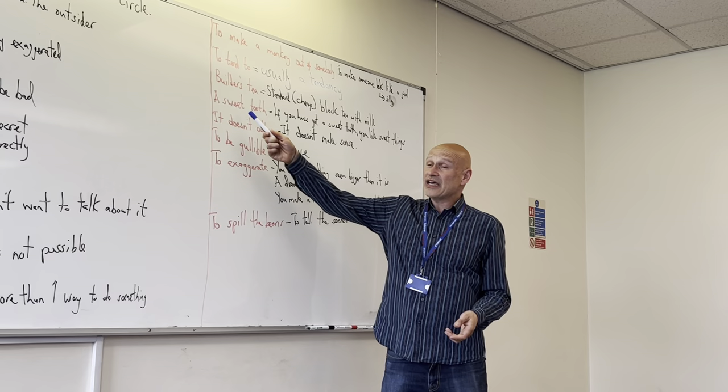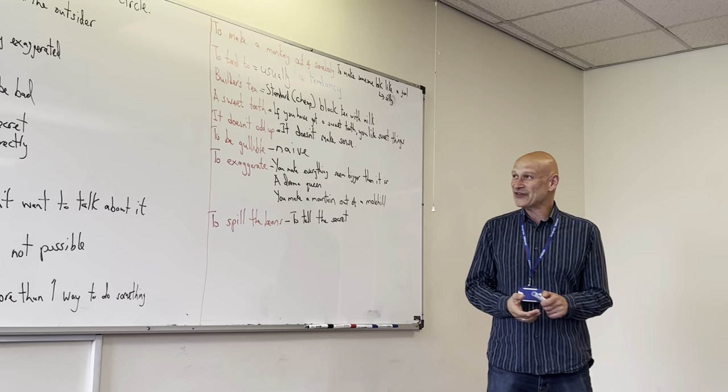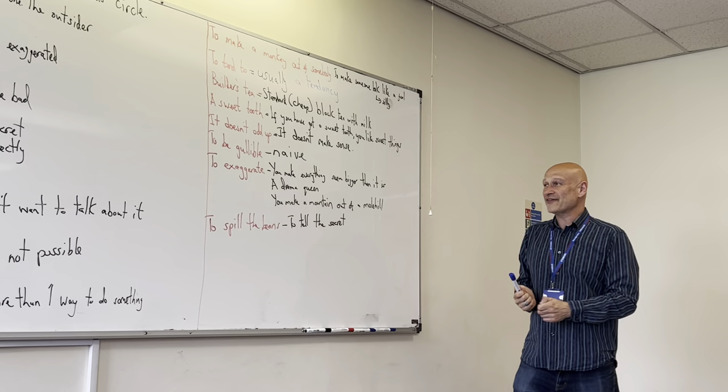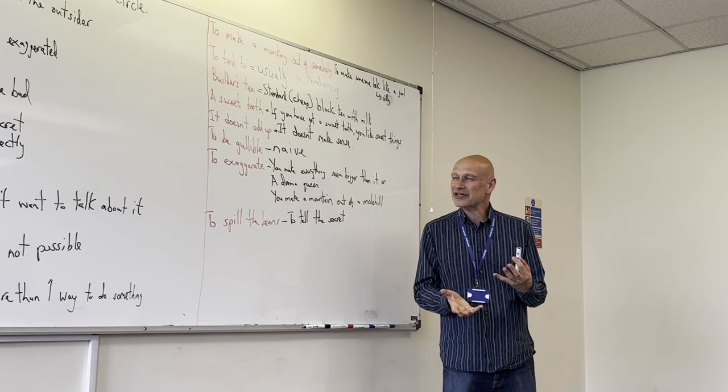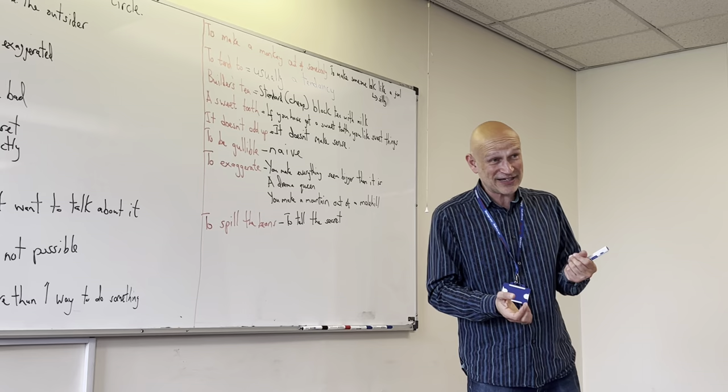If you've got a sweet tooth, it means you love sweet things, chocolate cake and all of that delicious stuff. If something doesn't add up, it doesn't make sense, well done. If you're gullible, you are naive. That's a great word. Sometimes, gullible people can be quite innocent. They believe things that you say very easily, very quickly.